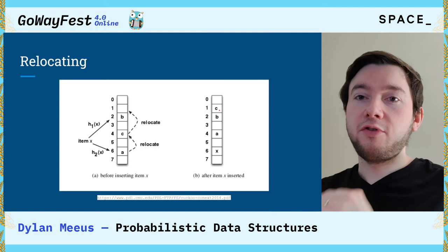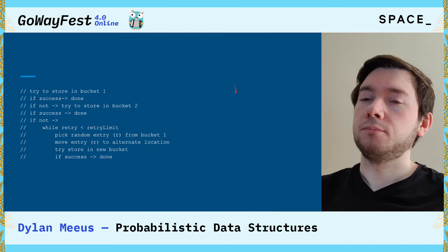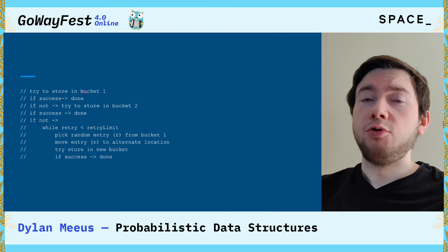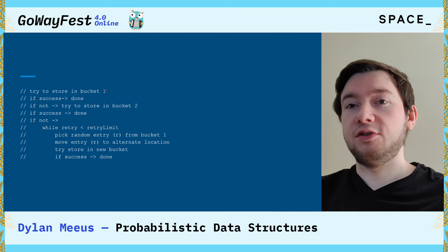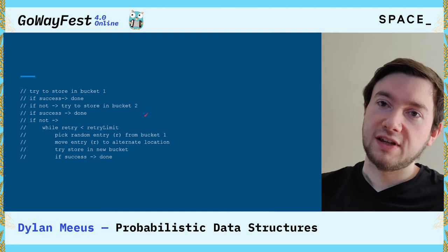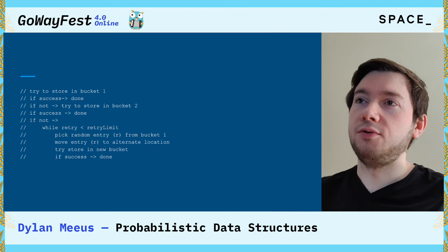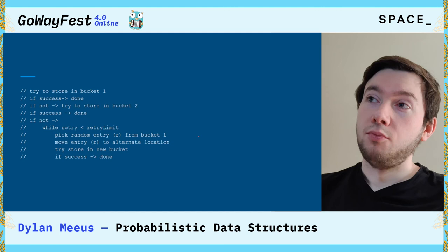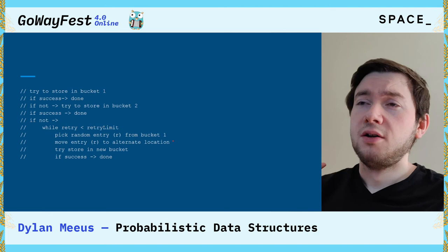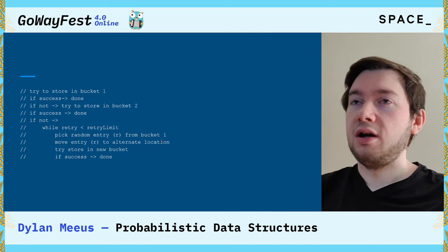In pseudocode: we have our username, we try to store the fingerprint in the first bucket — if successful, that's where it ends. If not, we try the second bucket. If that also fails, until we hit our retry limit, we pick a random entry, move it to its alternate location, and try to store our fingerprint there. We keep doing this until either we succeed or the retry limit is hit.